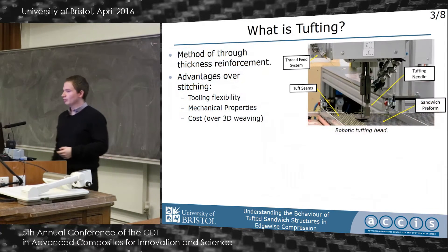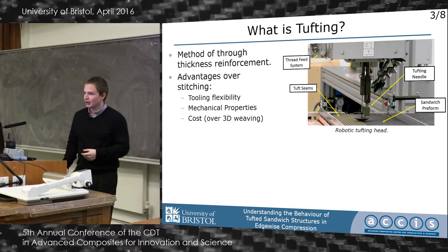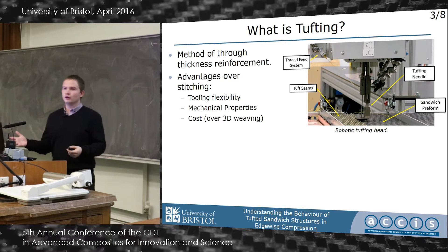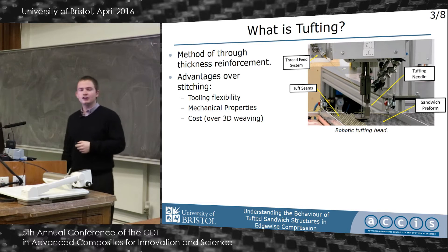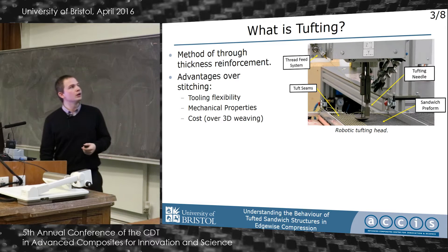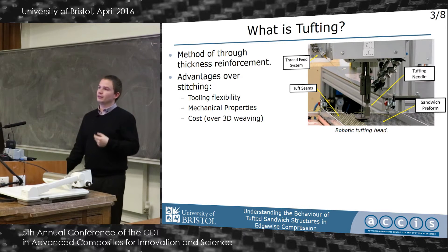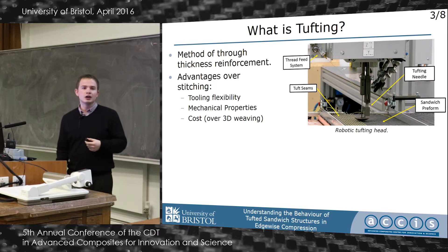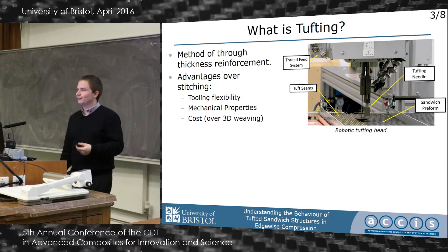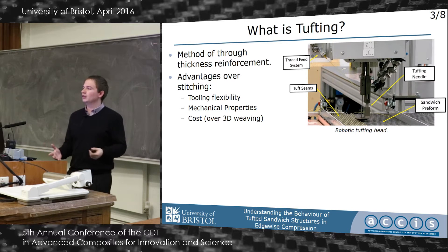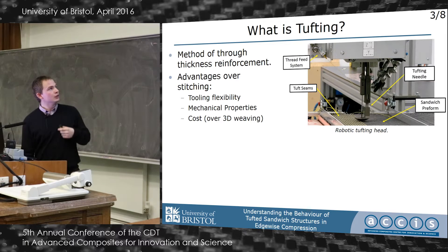A quick overview of what tufting is: tufting is effectively a through-thickness reinforcement derived from stitching, so if you're familiar with stitching of composites it's relatively close to that. The key difference is that we only use a single threaded needle to insert the reinforcement into the preform, as you can see in the top right. The primary advantage is that you only need access to one side of the preform, giving you more flexibility in the design of your part as well as the tooling. The effect of only using a single needle is that there is less effect on the in-plane fibers.